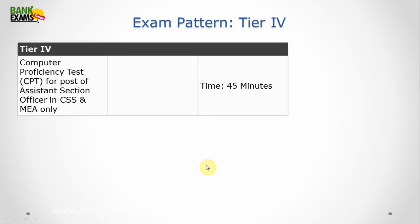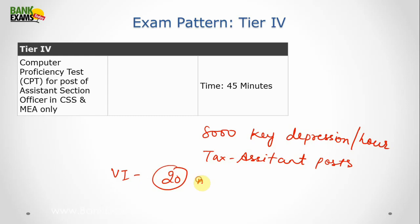So the 4th tier is related to Computer Proficiency, in which your skills related to computers will be tested. This paper is qualifying in nature only. Computer proficiency test for assistant section office only. Data entry skills at the speed of 8000 key depressions per hour. And this is for the tax assistant post only.